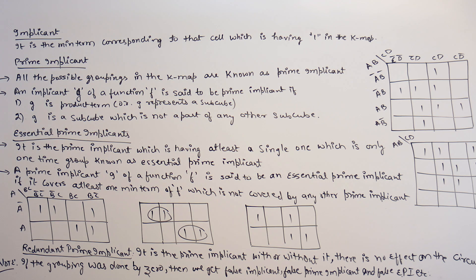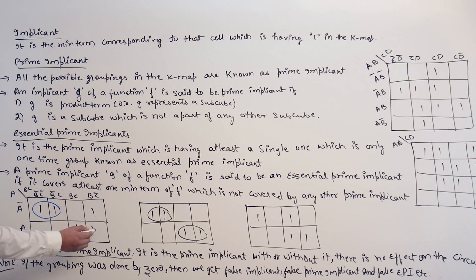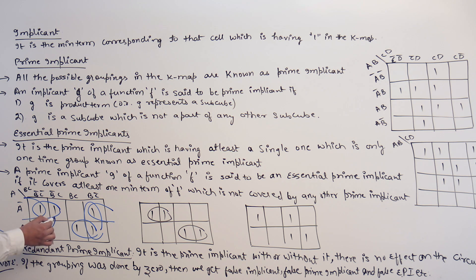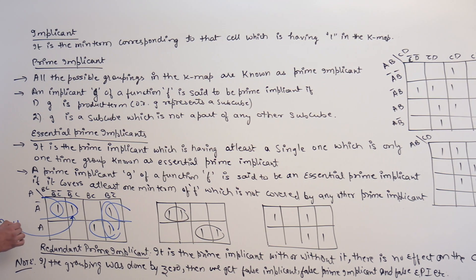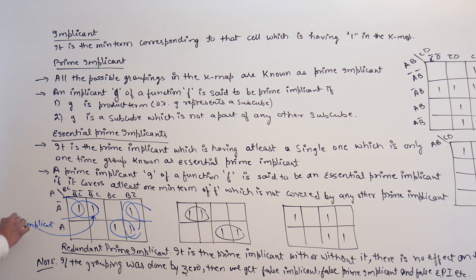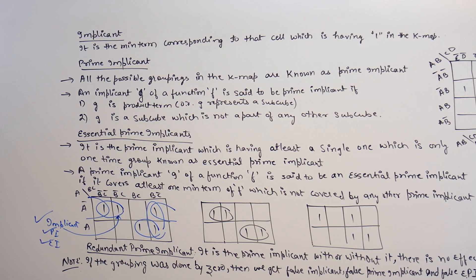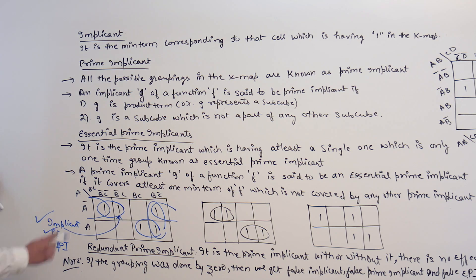Let us check this one. In this K-map, we can make a subcube like this, we can make a subcube like this, as well as we can also make a subcube like this. Now, this subcube and this subcube — they are implicants. They are prime implicants as well as they are essential prime implicants.